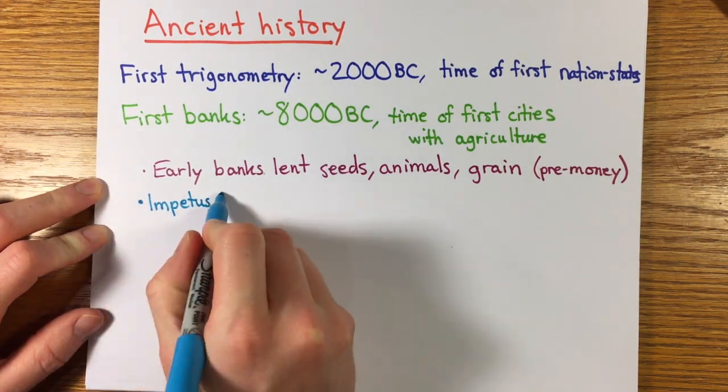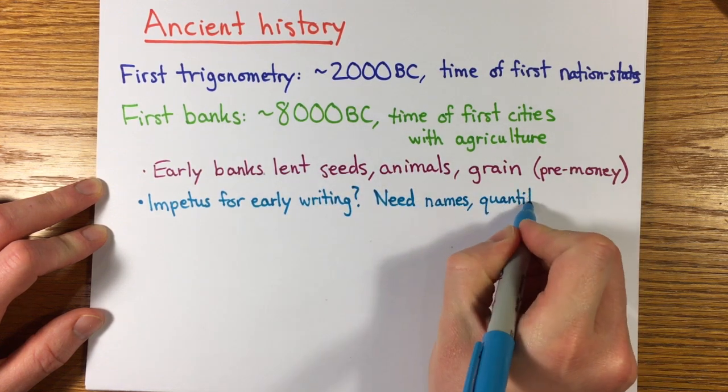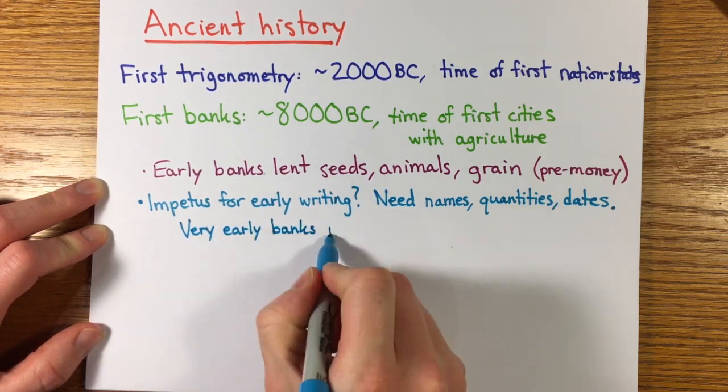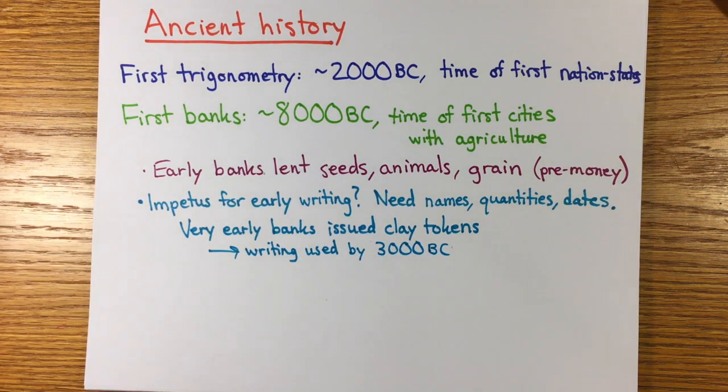Banking predates writing. In fact, it is almost certainly banking which provided a need for symbols for goods, quantities, names, and dates. We know that the earliest banks issued clay tokens representing quantities of stuff. We have examples of these tokens with writing from about 3000 BC.